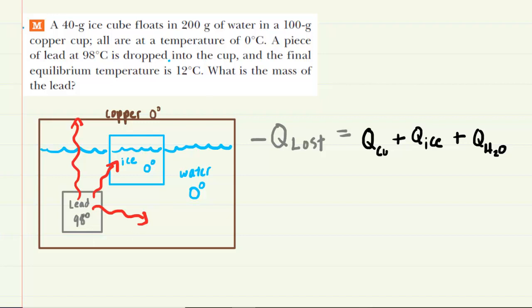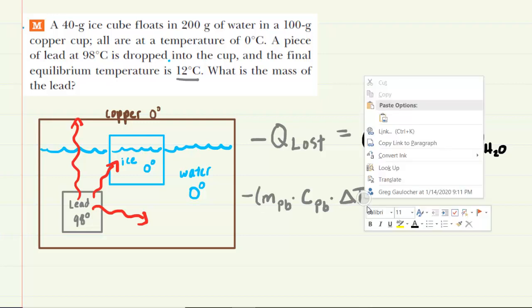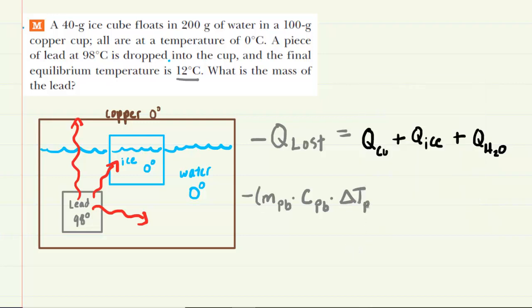Now, for the lead, it's going to lose heat, and its temperature is going to drop down to 12 degrees. The expression we would use for that loss of heat and causing that change in temperature would be the following. It would be the mass of the lead multiplied by the specific heat capacity of lead, which we can look up, multiplied by the change in temperature for the lead. And we'll be able to calculate that relatively easily. Now, the other expressions are a little bit more intricate, especially the ice, as we will see. So let's actually bring this down here and make some room.